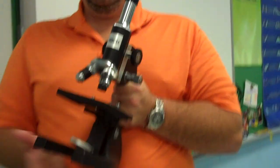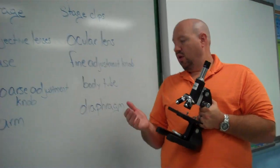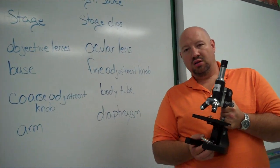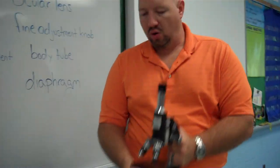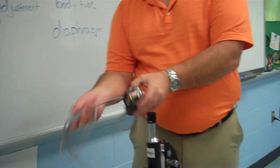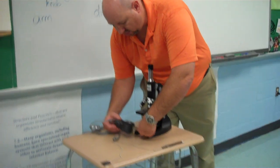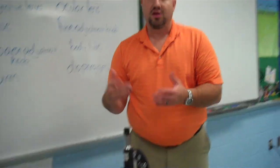Now what you'll be using has two different light sources. We have either a mirror that you just bend the light to get to the body tube. Or we have the electric portion where this plugs into the microscope here and just plug it in. That's how you have the electric light.